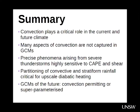In summary: convection plays a critical role in the current and future climate and there are many aspects of convection not captured in GCMs. The precise phenomena arising from severe thunderstorms are highly sensitive to CAPE and shear, and even the large-scale CAPE and shear from climate models is probably missing a lot of regional variation. The partitioning between convective and stratiform rainfall is really critical for upscale diabatic heating effects. Ultimately, future GCMs will be convection-permitting, super-parametrized, or use some brand new convection scheme.